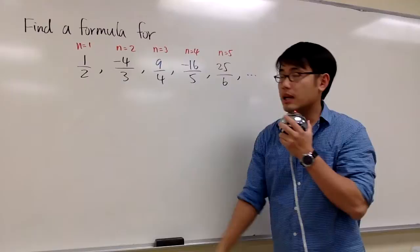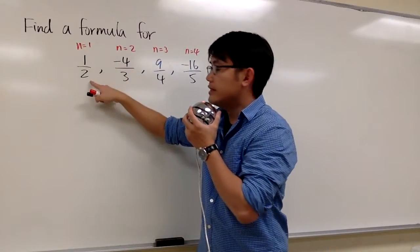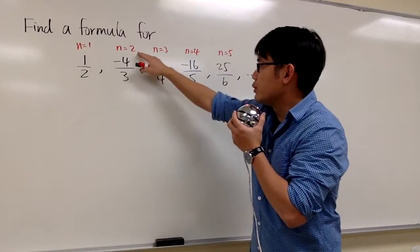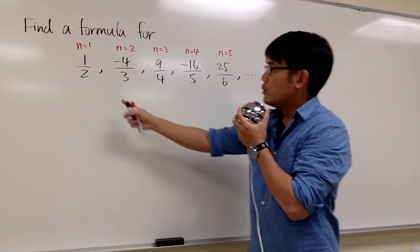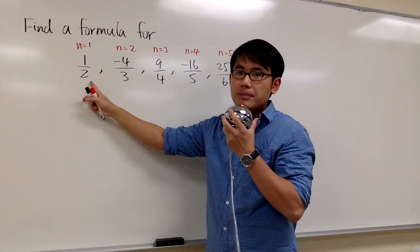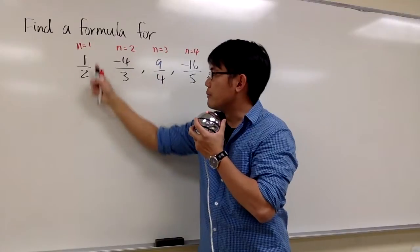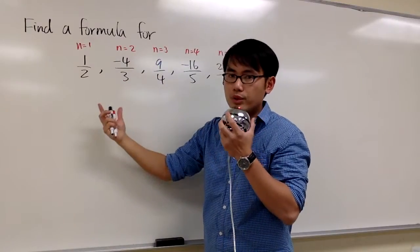How can we do that? Begin with n equals 1, we get this, and when n equals 2, we get that, and so on. We should always ask ourselves, is it possible to go from the first number to the second number? What do we need to do?